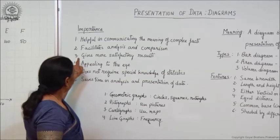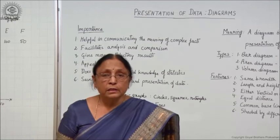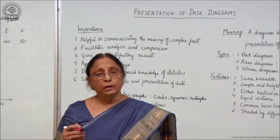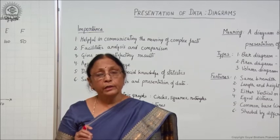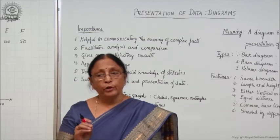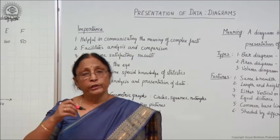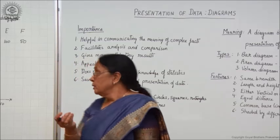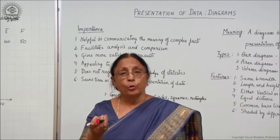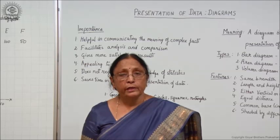Third, diagrams give more satisfactory results. If you compare diagrams with tables, tables also show classification of data clearly, but diagrams are more satisfactory. In a table, you have to go through figures and compare them. But with a diagram, by drawing lines or bars, you can easily draw conclusions and get the satisfaction that you have understood what is shown.